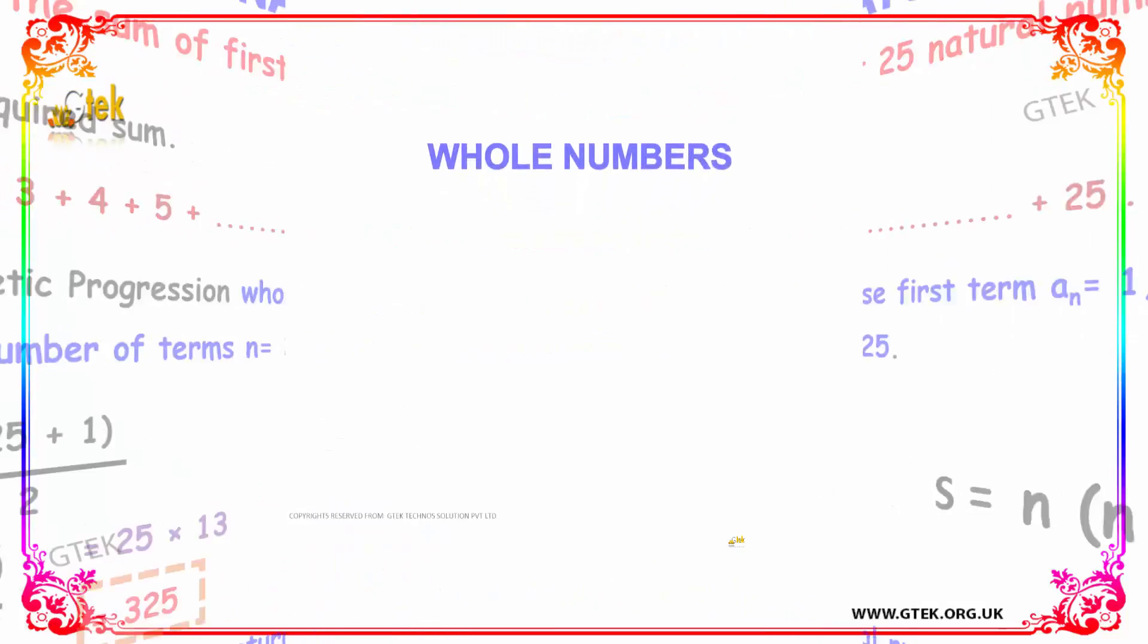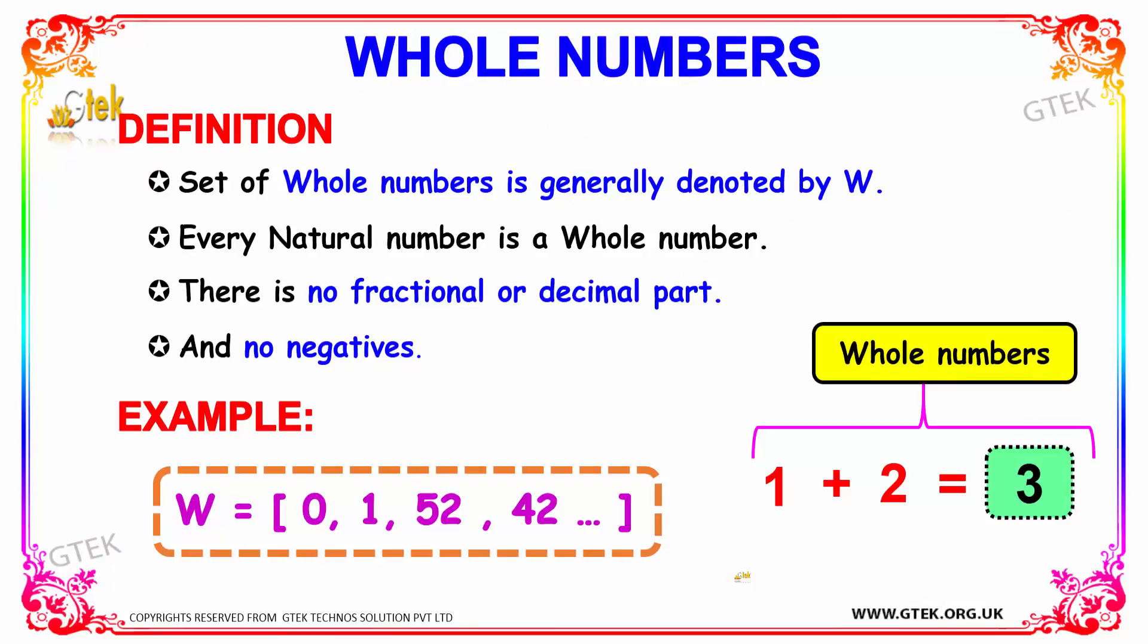Let's move on to the next topic, whole numbers. So the definition of whole numbers is that the set of whole numbers is generally denoted by the letter W.